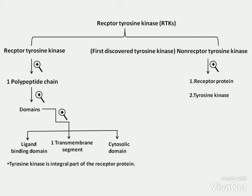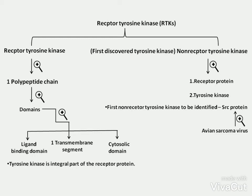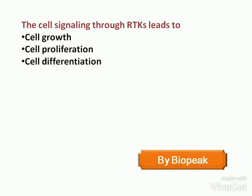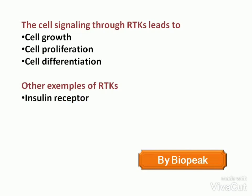The first non-receptor tyrosine kinase to be identified was the SRC protein, which was found in the avian sarcoma virus. Cell signaling via RTKs leads to cell growth, cell proliferation, and cell differentiation. Other examples of receptor tyrosine kinase include the insulin receptor and the nerve growth factor receptor.